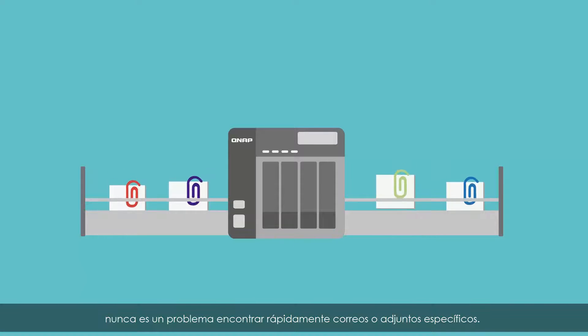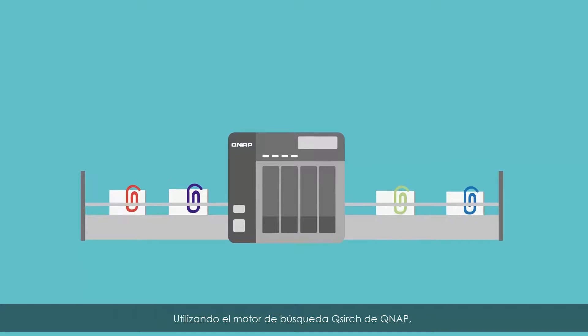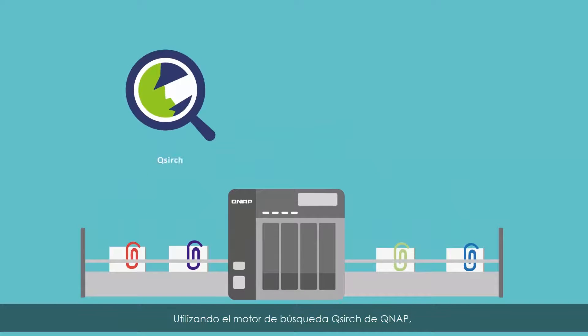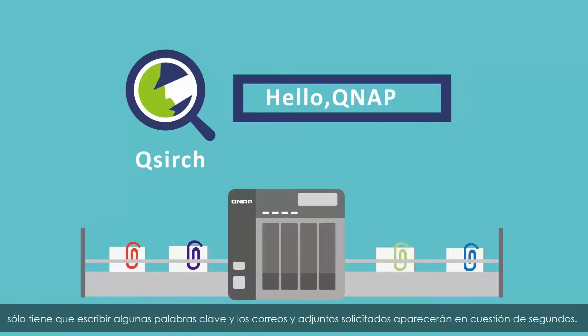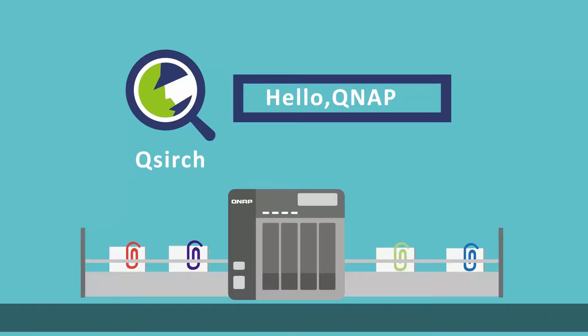Even with a huge amount of emails stored on your NAS, it is never a problem to quickly find specific emails or attachments by using QNAP's proprietary QSearch search engine. Just type in a few keywords and matching emails and attachments will be found within seconds.